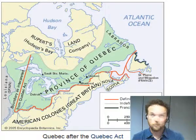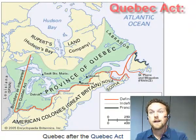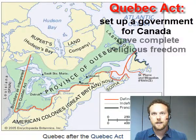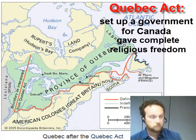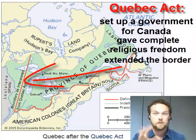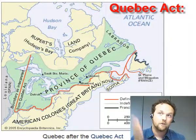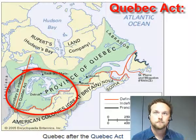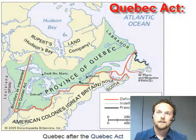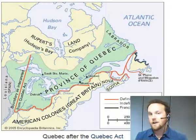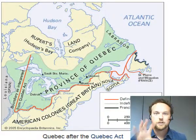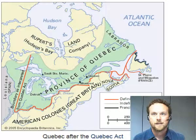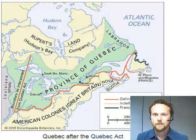Along with these Intolerable Acts, around this same time Parliament passed what is known as the Quebec Act. The Quebec Act set up a government for Canada and gave Quebec complete religious freedom. But it also extended the borders of Quebec — which pleased French Canadians but angered a lot of American colonists, mainly because they eventually wanted to move into that area. As you can see from the map, the province of Quebec now included parts of what is now upstate New York, Pennsylvania, Ohio, Indiana, Illinois, and Michigan. So French Canadians had access to all of this land, and American colonists were upset about that too.